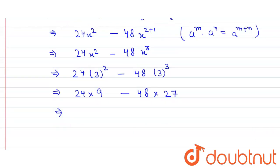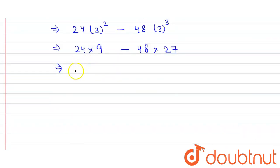So we get 216 minus 1296, which equals minus 1080. That's our answer.